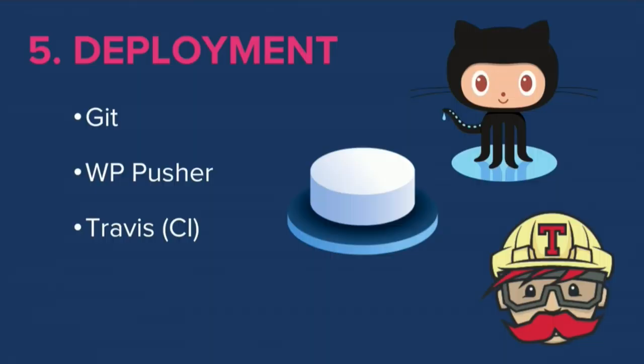The last component is deployment. There have traditionally been three ways to deploy code from a local environment to a remote server: vanilla Git — SSH into your server, clone a repo, then SSH again and pull changes each time; WP Pusher, which I'll demonstrate in a moment; and a full build system like Travis CI, which runs a build, tests your code, checks standards, and pushes to production if everything passes.